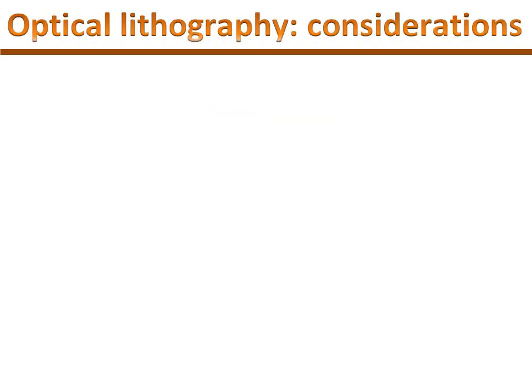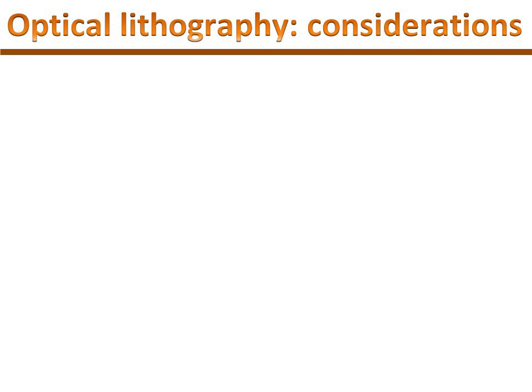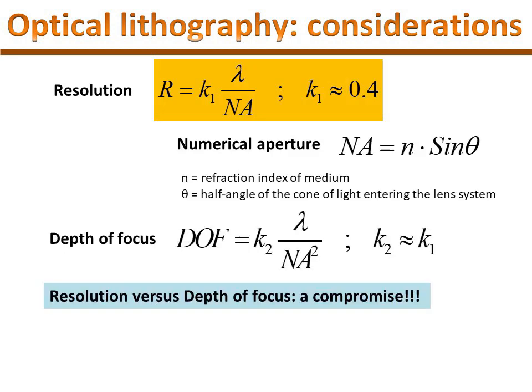To achieve nanometer scales using optical lithography, it is very important to pay attention to two key concepts: resolution and depth of focus. Both depend on the main characteristic of the light, its wavelength. The shorter the wavelength is, the smaller the resolution, which means that we can achieve smaller dimensions.